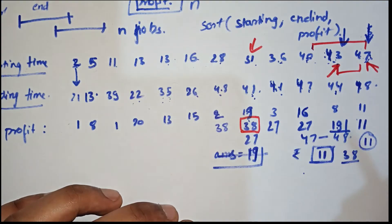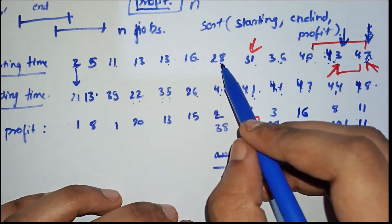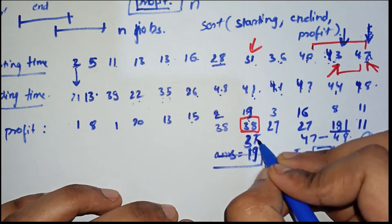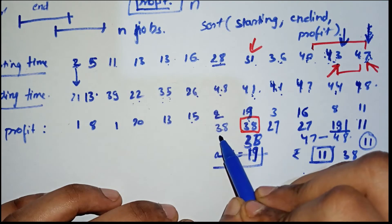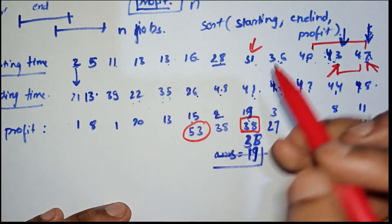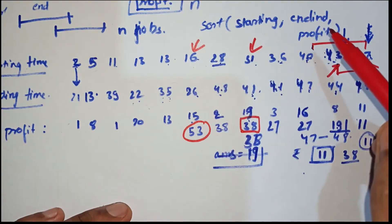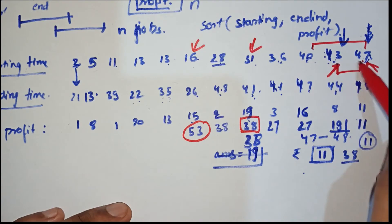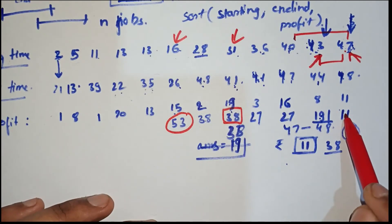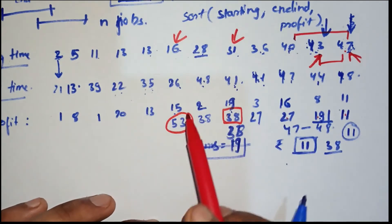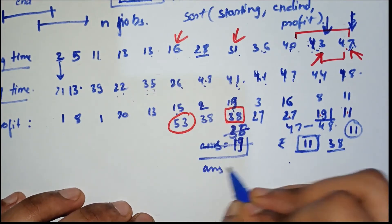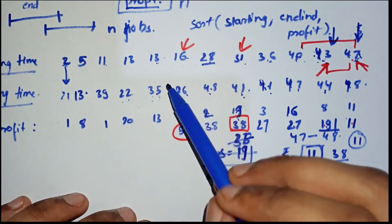Now for the job from 16 to 26: what is the lower bound of 26 in the starting time array? It's 28. So we add 15 plus 38 equals 53. Here our answer updates to 53. So I haven't updated it earlier, but now 53 is here — we are doing four jobs giving us 53.